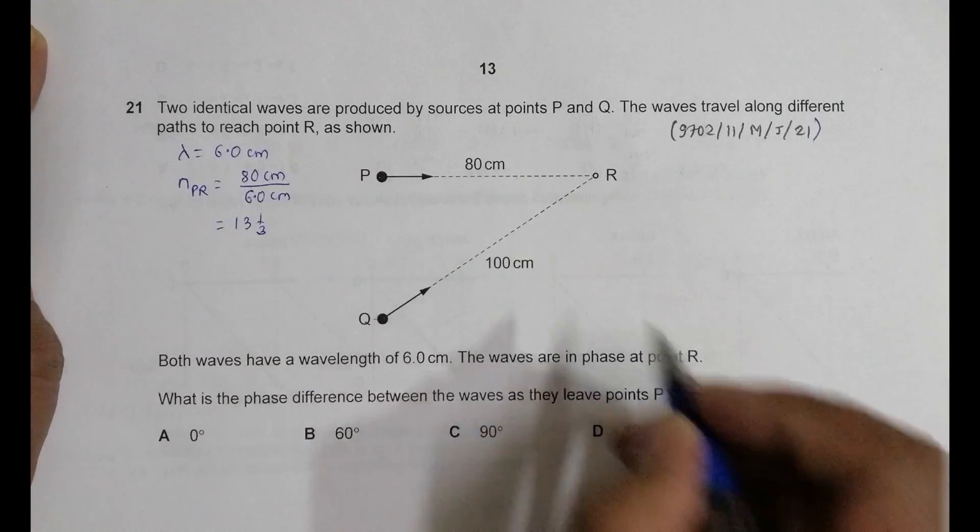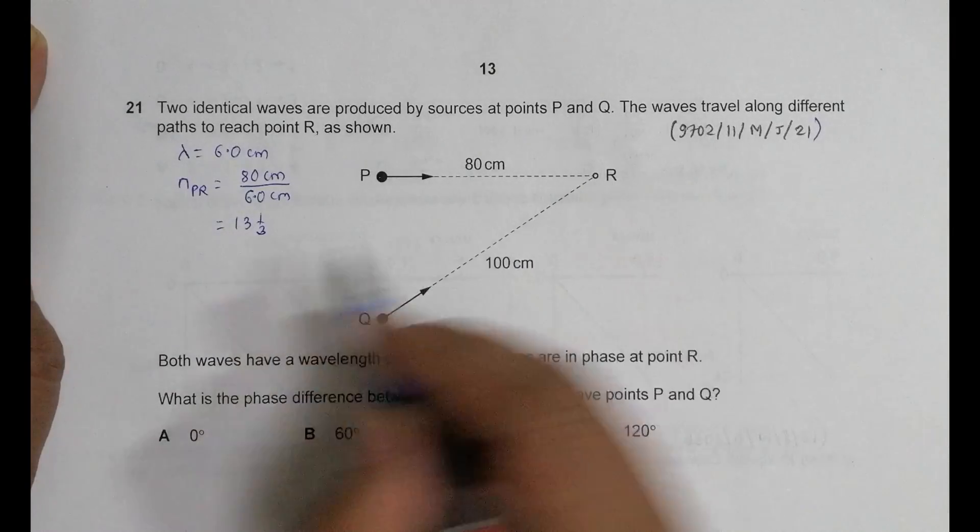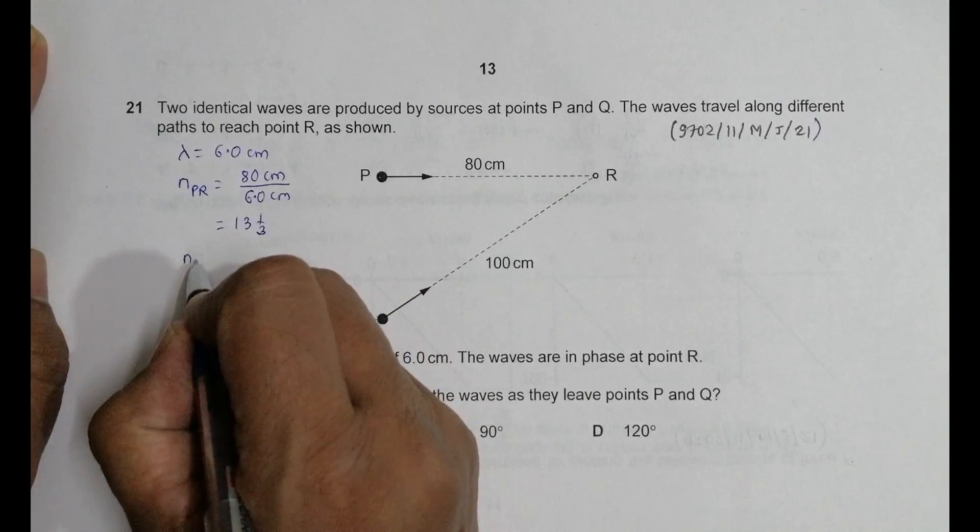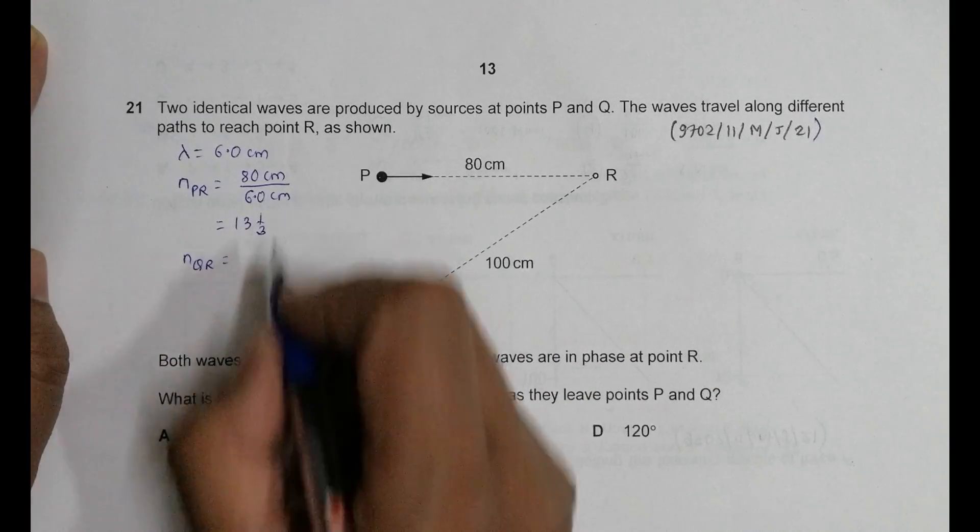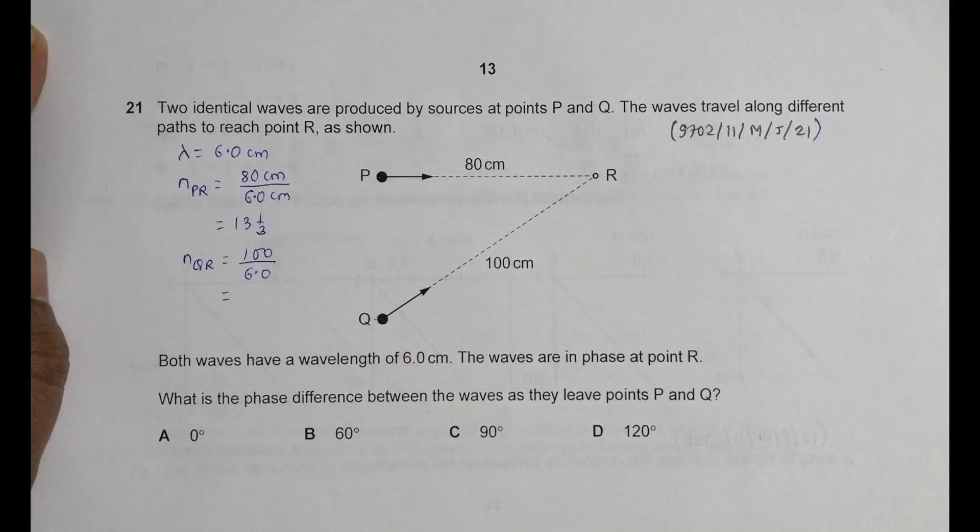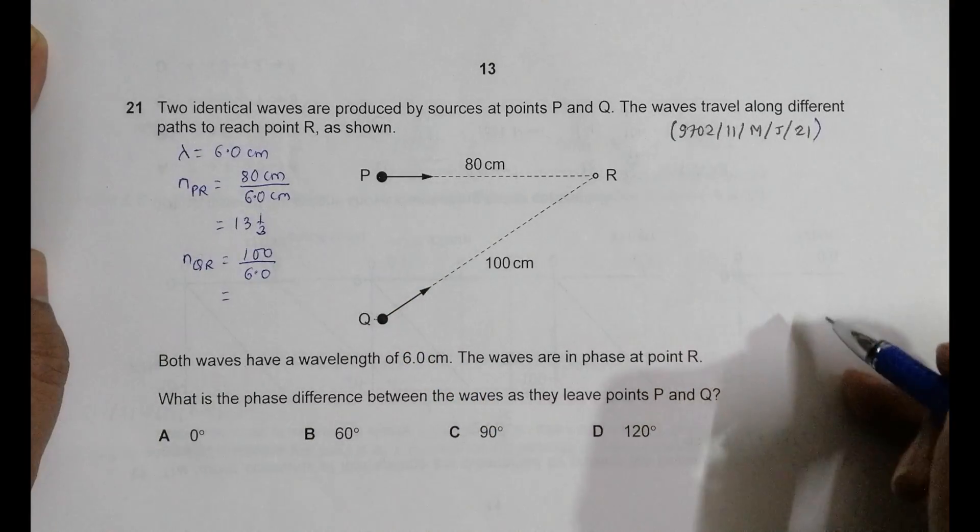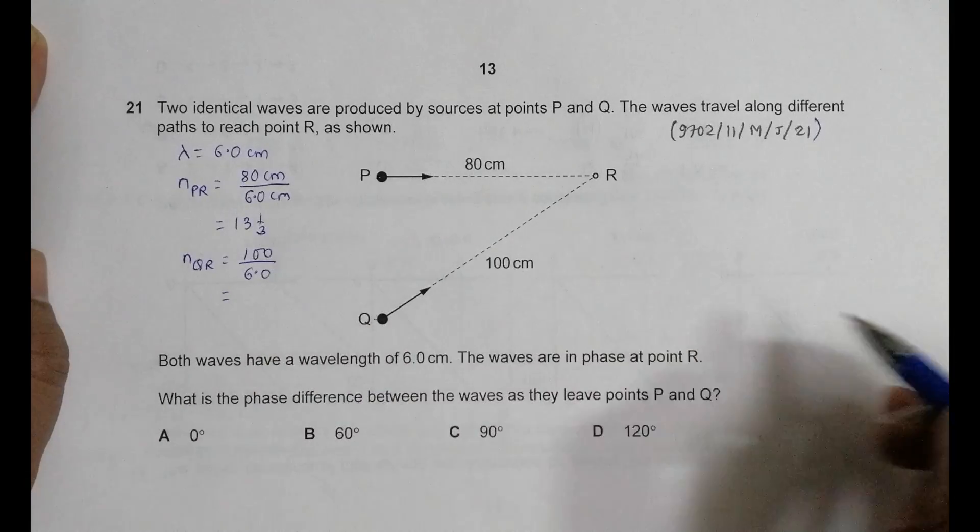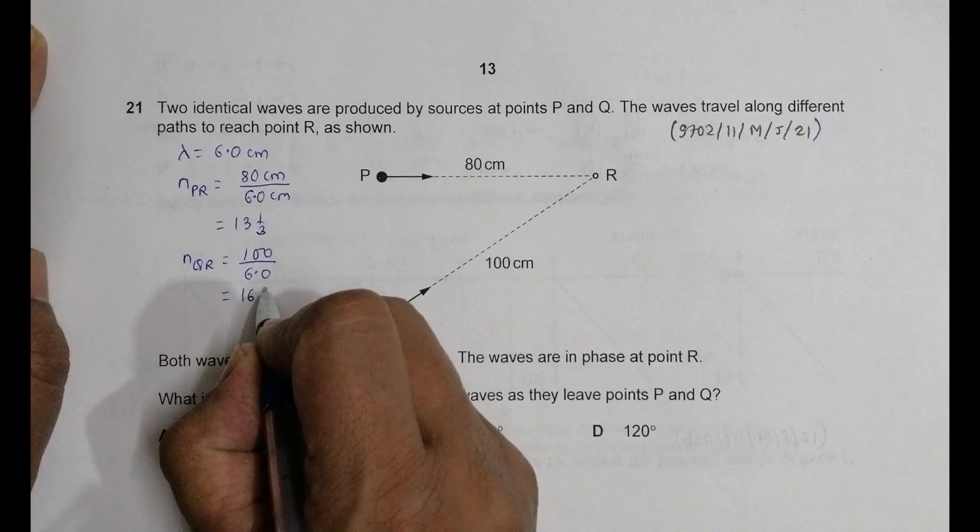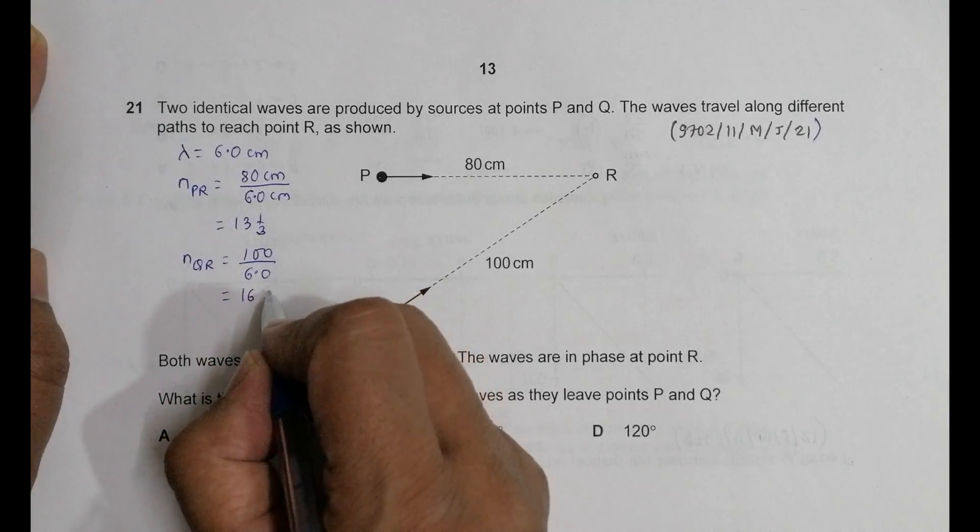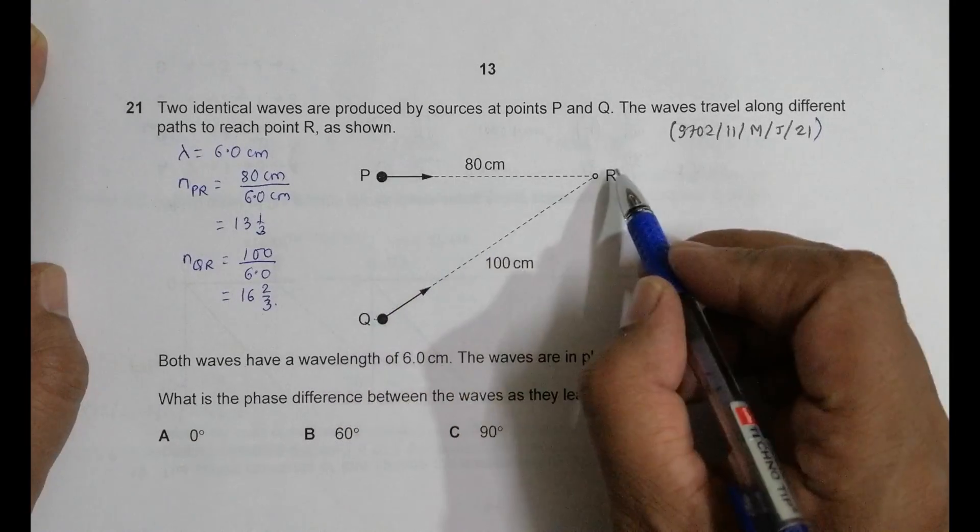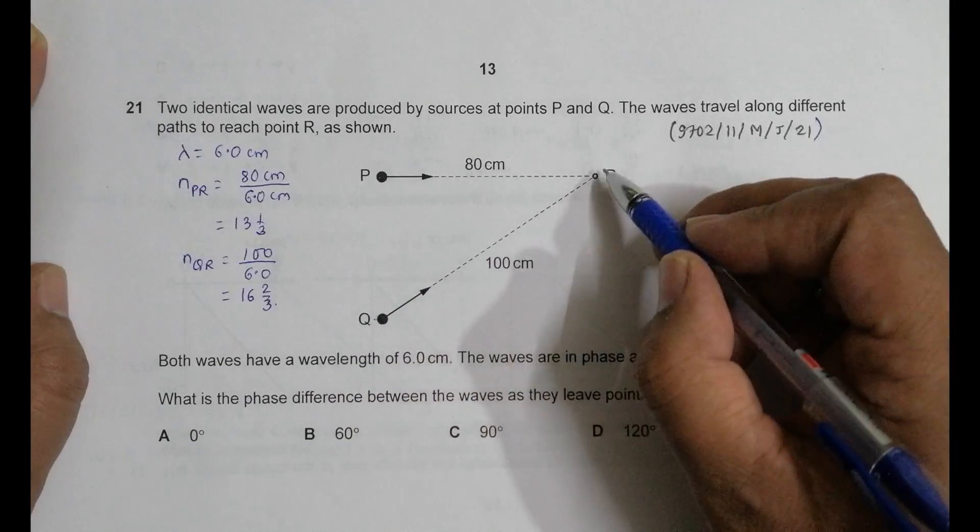Then the number of waves in this QR path will be equal to NQR, will be equal to 100 by 6.0. So it should be, 100 is 6, 16, the 96, so it is 16, then it is then 2/3, 2/3 waves. So here there are 13 and 1/3 waves and here there will be 16 and 2/3 waves.